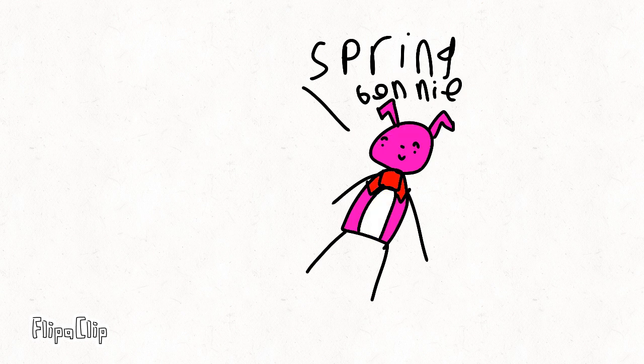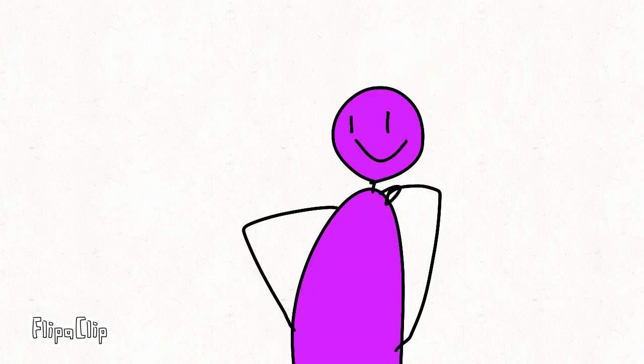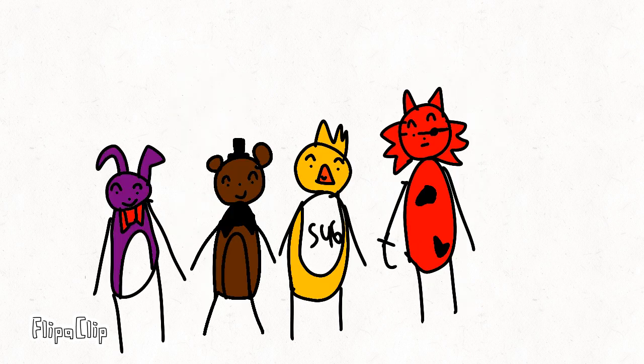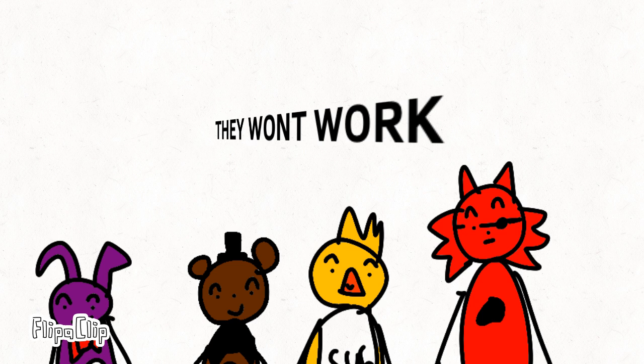You see, Spring Bonnie spills some paint on him as well. Now William Afton's like Bonnie. Then he builds a chicken and a fox, but guess what? He notices these things aren't gonna work without children.